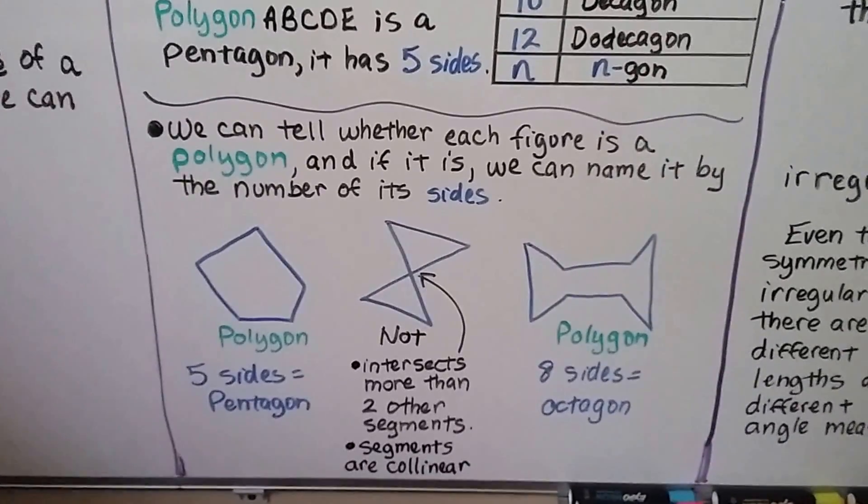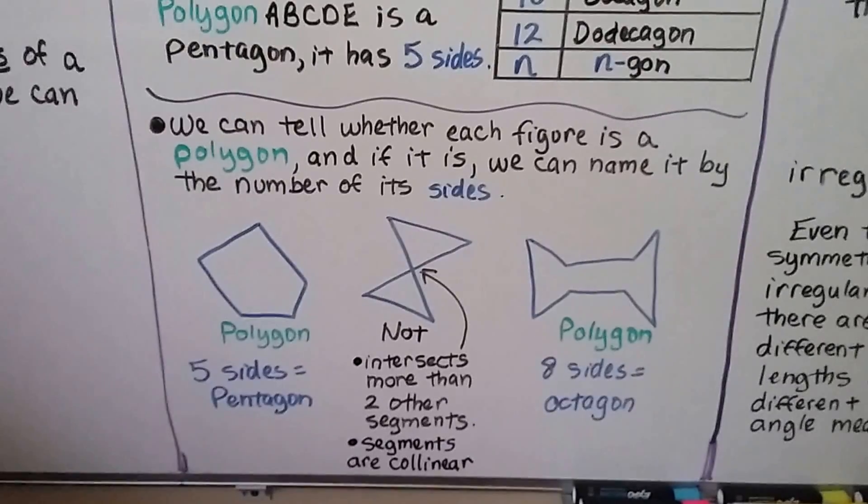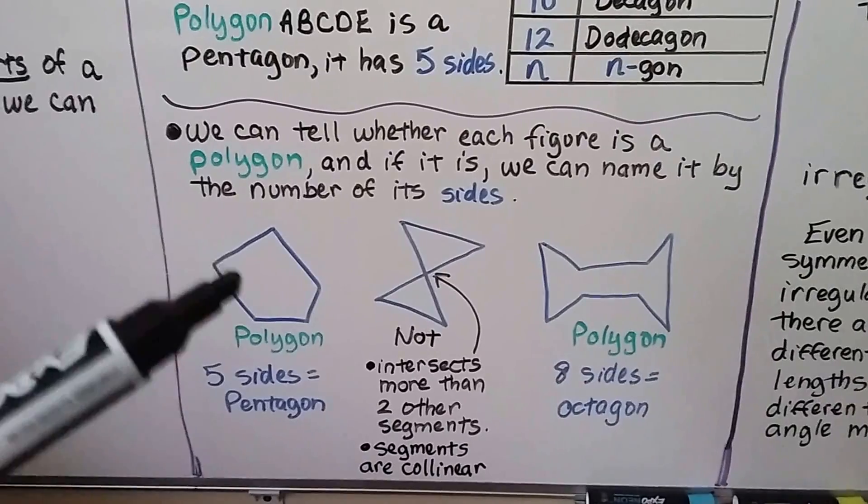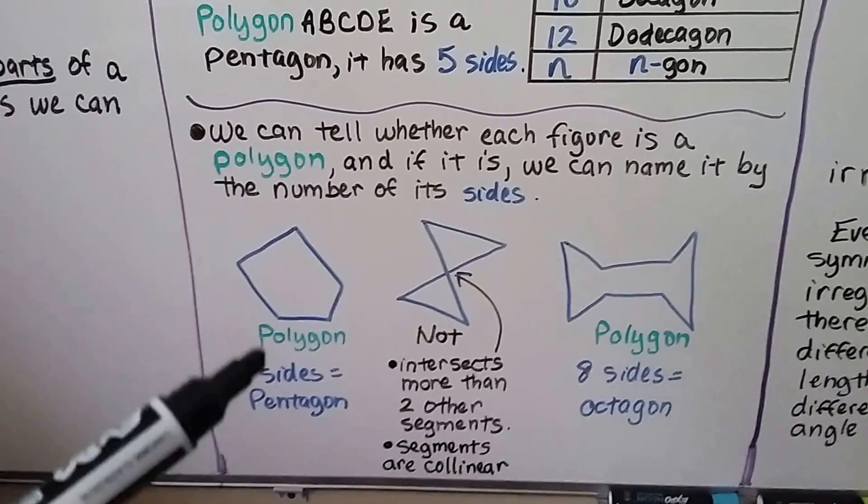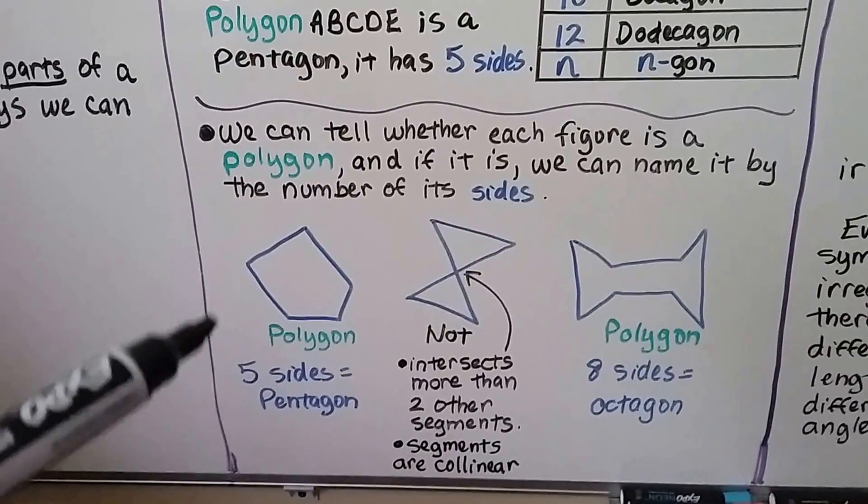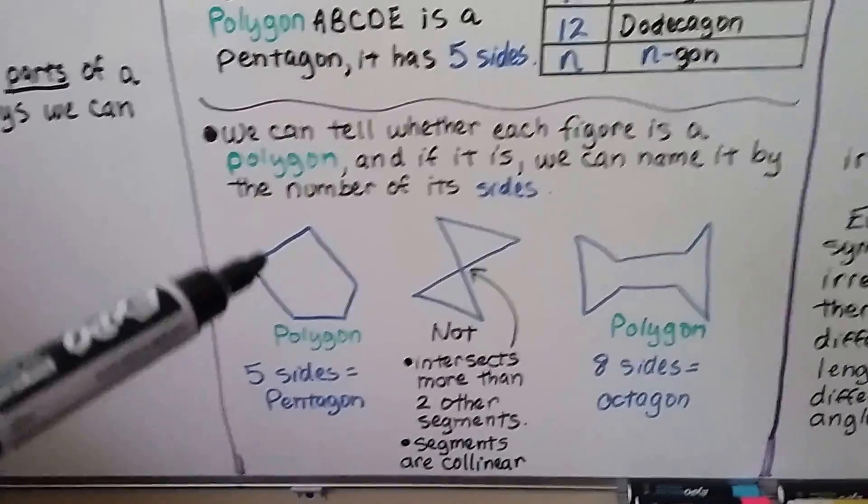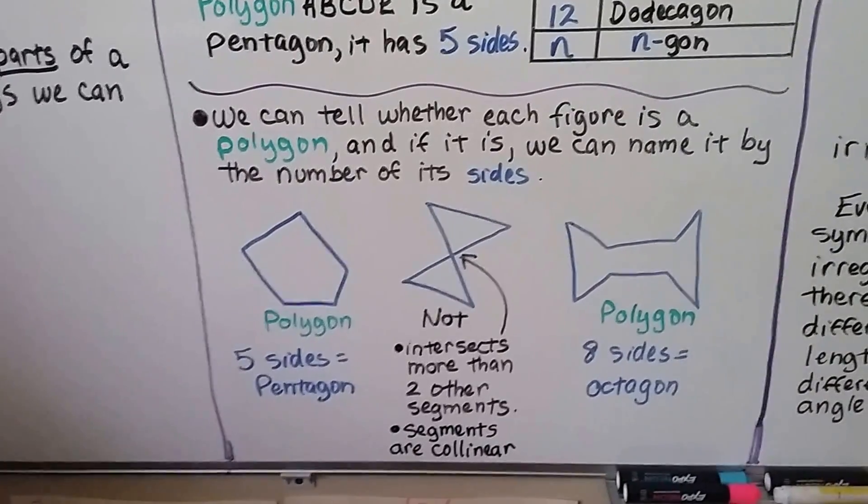We can tell whether each figure is a polygon, and if it is, we can name it by the number of its sides. Here we have a pentagon. It is a polygon. It is a closed plane figure, and it is formed by three or more segments. Each segment intersects exactly two other segments, and they only intersect at their endpoints. And no two points are collinear.